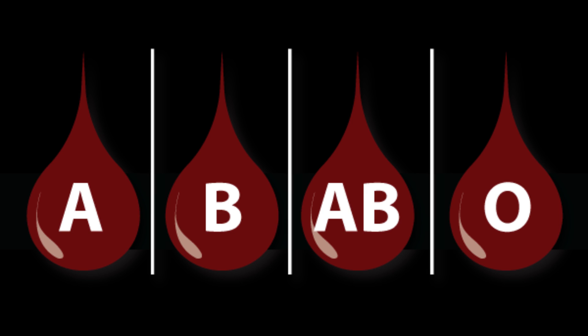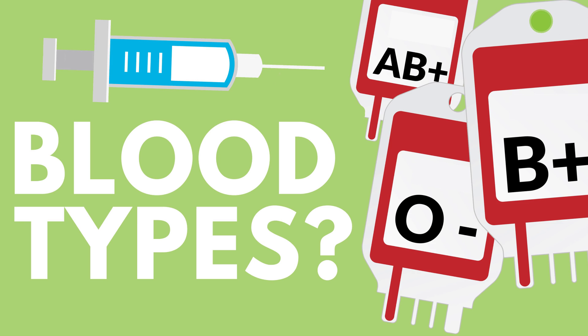Blood type and illnesses. Due to the fact that every blood type has different characteristics, every blood group is resistant to one type of disease, but at the same time it is more susceptible to some other kind of disease. In order to prevent specific diseases, you should know the characteristics of your blood type.